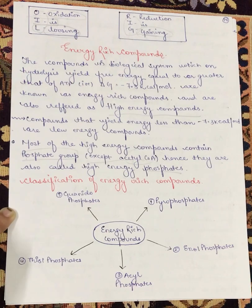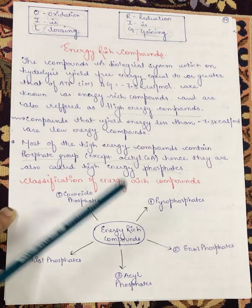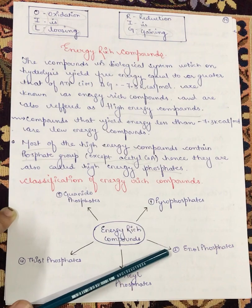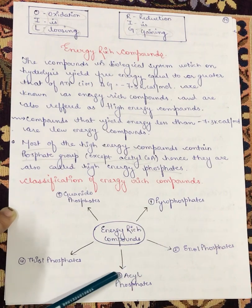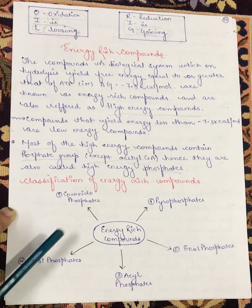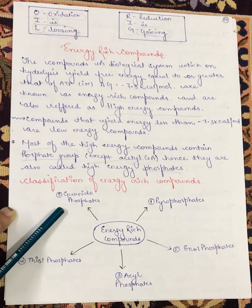The classification of energy-rich compounds is divided into five types: first is pyrophosphates, next is enol phosphates, then acyl phosphates, thiol esters, and guanido phosphates.